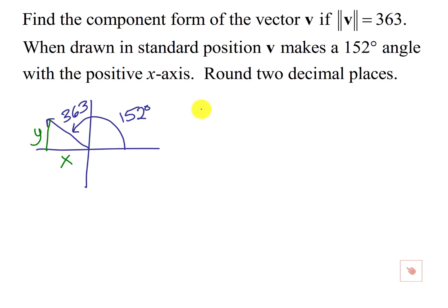So first of all, if I had cosine of 152, that's going to be adjacent, which is x, over hypotenuse, which is 363, and then we could multiply the 363 over here, and we'd have the x component of the vector.